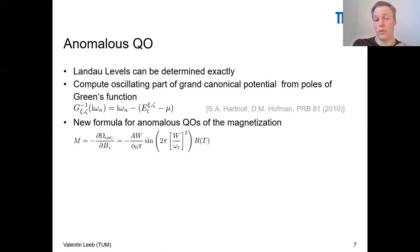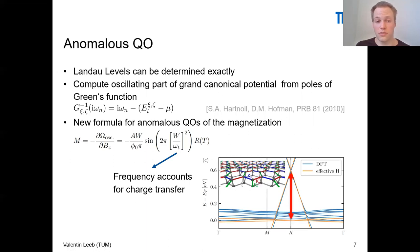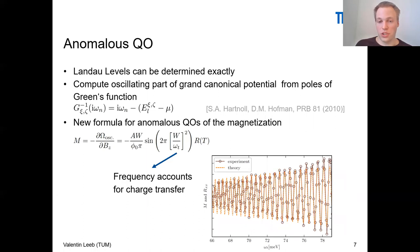We can basically compute the quantum oscillations from the Landau levels, which we can determine exactly for this Hamiltonian. What we found in the end is a new formula for anomalous quantum oscillations of the magnetization, which consists of two parts, this oscillating part and the temperature decay. Let me first comment on the frequency of the oscillations. The frequency, you can already see V appears again. The frequency accounts for the charge transfer which happens in the heterostructure. The frequency is associated with the Fermi surface generated by the graphene Dirac cone, as if there would be no hybridization.